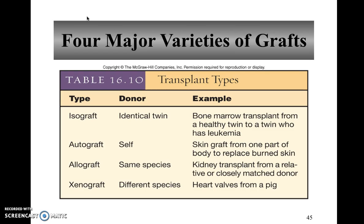Some people have advocated cloning humans as a way to get replacement organs. A clone would function as an identical twin because they'd have the same DNA, the same MHC genes, and the same HLA antigens. However, there's an ethical problem: if you take the clone's heart, they can't survive — so you'd almost have to declare clones non-human to avoid it being considered murder. So isografts are something very few people can receive.